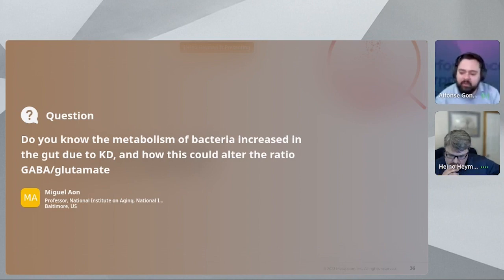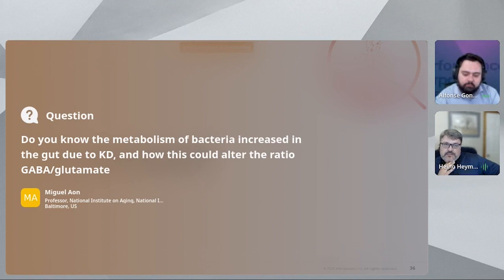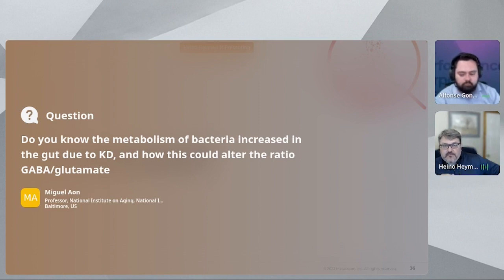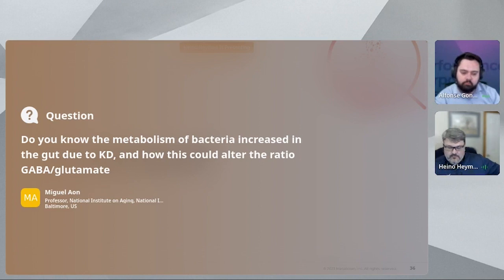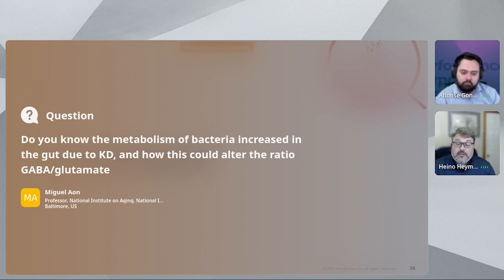The first question: do you know the metabolism of bacteria increased in the gut due to the ketogenic diet, and how this could alter the ratio of GABA to glutamate? Through the ketogenic diet, the microbiome was changed and these specific bacterial species contributed to reducing the activity of gamma-glutamyl transferase. By reducing the gamma-glutamylated amino acid concentration in the systemic environment, those amino acids did not cross the blood-brain barrier as readily, which actually increased the GABA-to-glutamate ratio and provided the seizure protection.